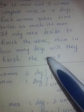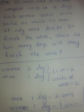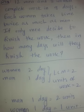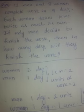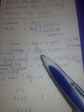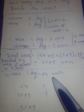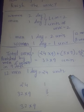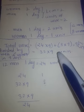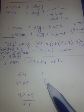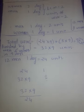Now we move to the question: if only men decide to finish the work. We have found that total work is 32 × 9 = 288 units. Now only men are going to finish — women are not going to work. 12 men in one day finish 24 units. So days required = 288 × 1 ÷ 24. Simplifying: 288 ÷ 24 = 12 days.